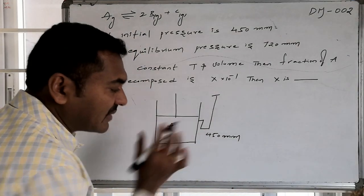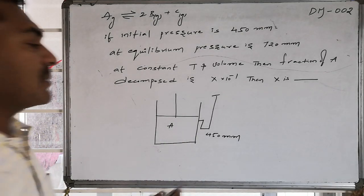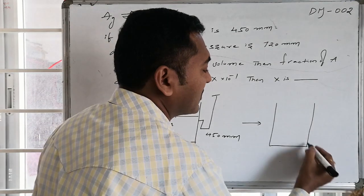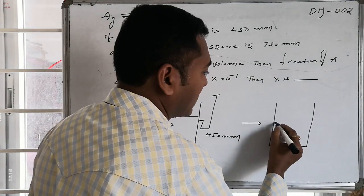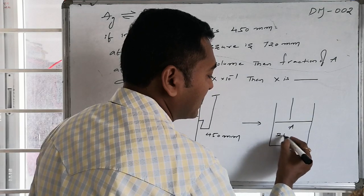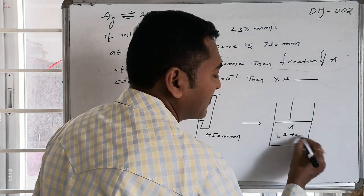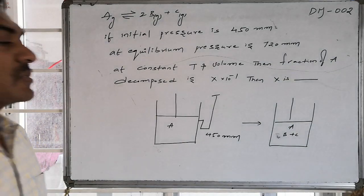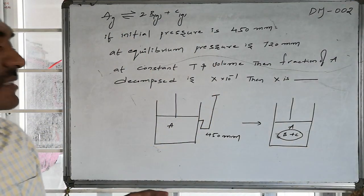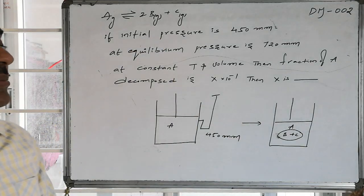Whereas if it is 100% A, the pressure is 450 mm, but this A is undergoing decomposition. Some part of A is undergoing decomposition, we are left with some A and some amount of 2B, and some amount of C we are having. So therefore some amount of A is undergoing decomposition and it is generating B gases followed by C gases.